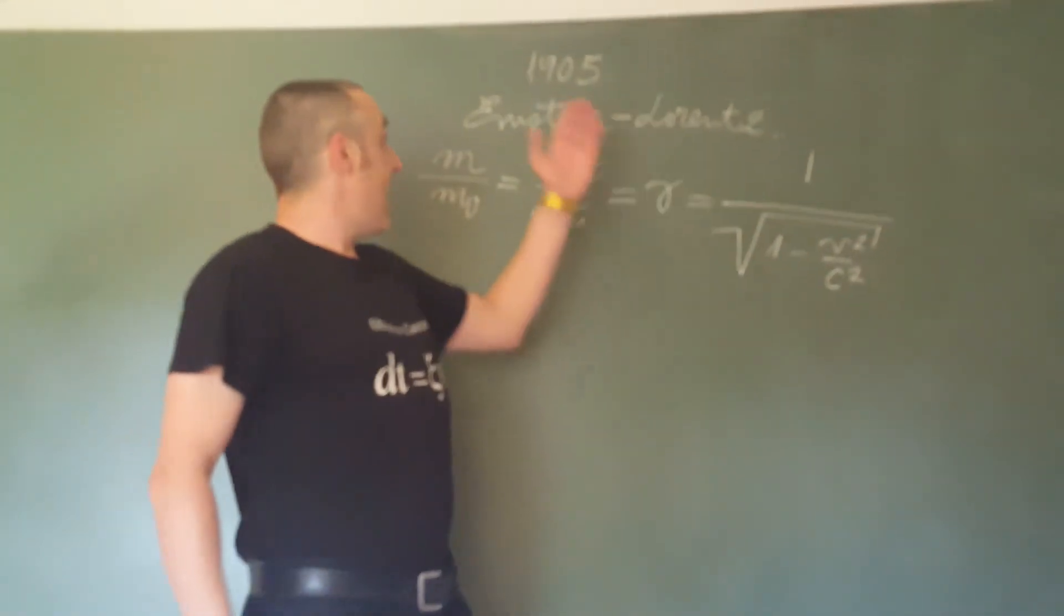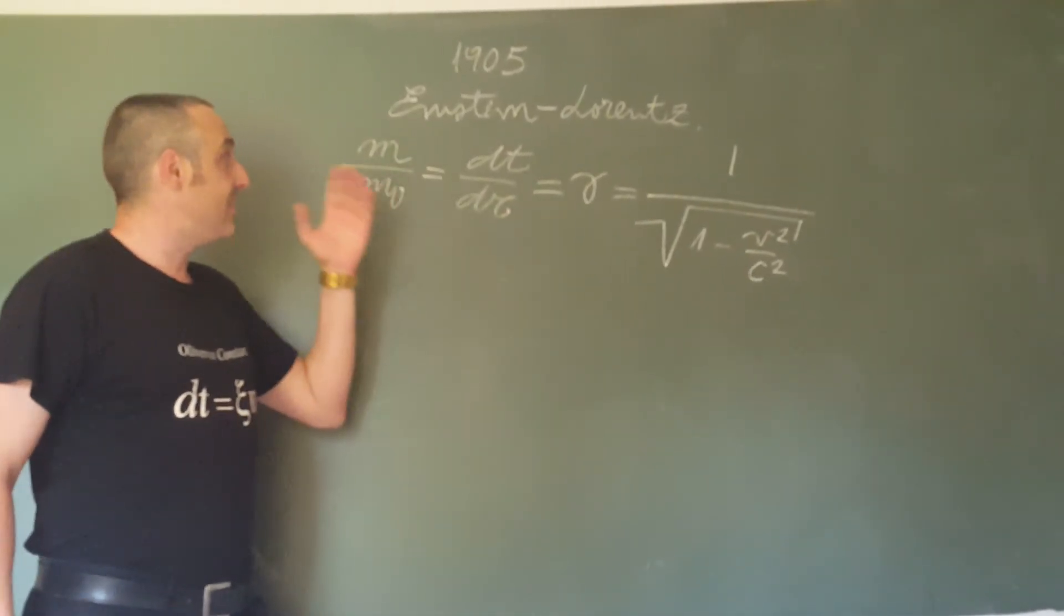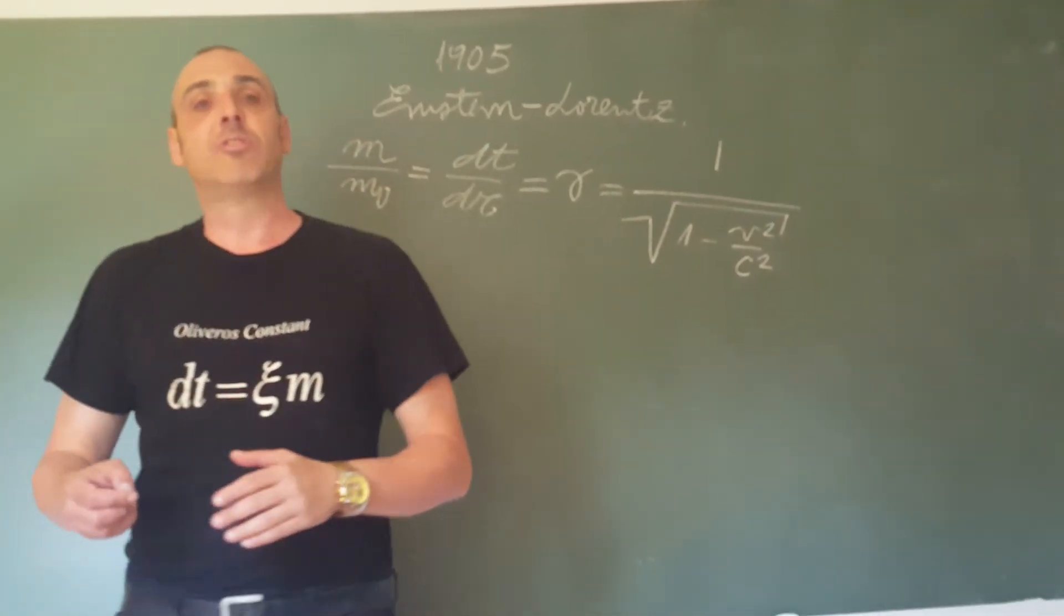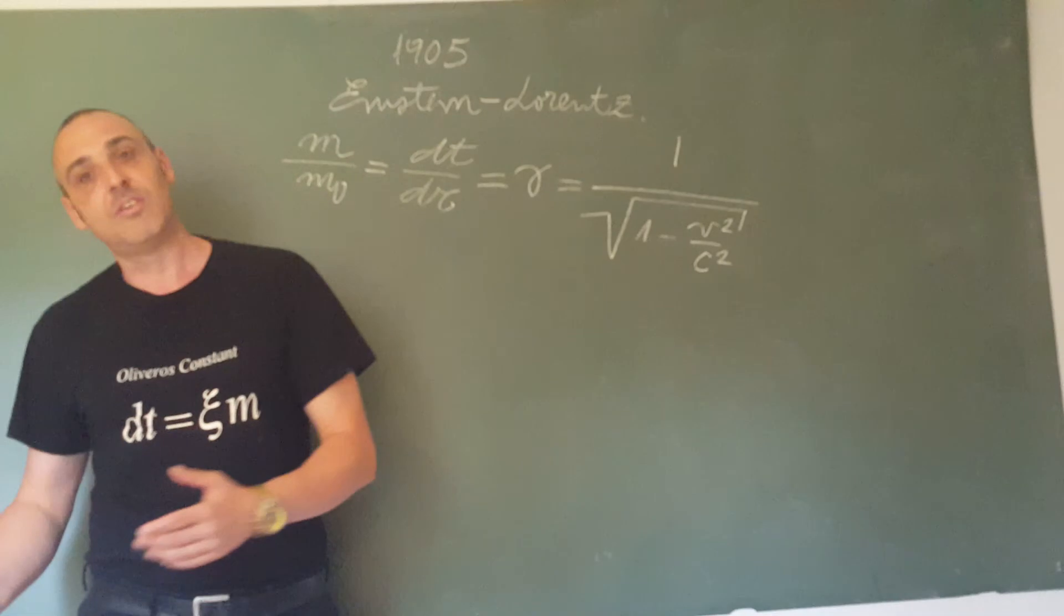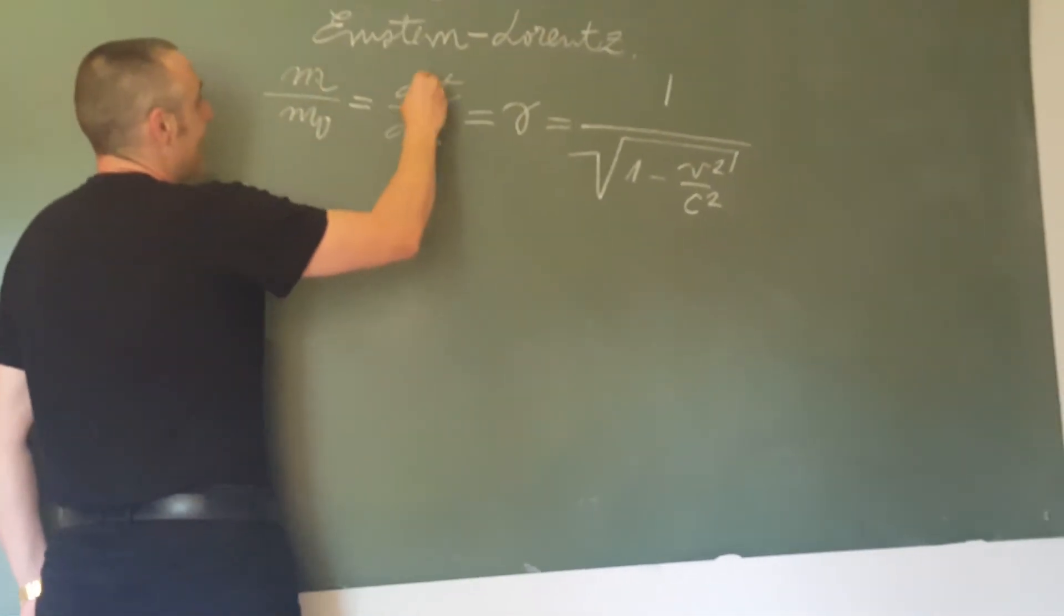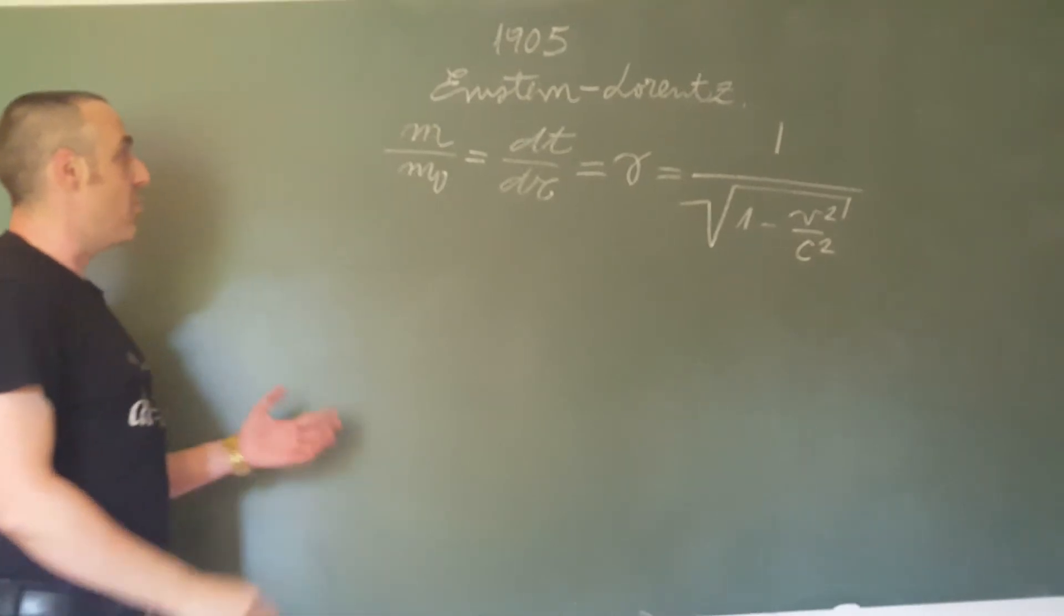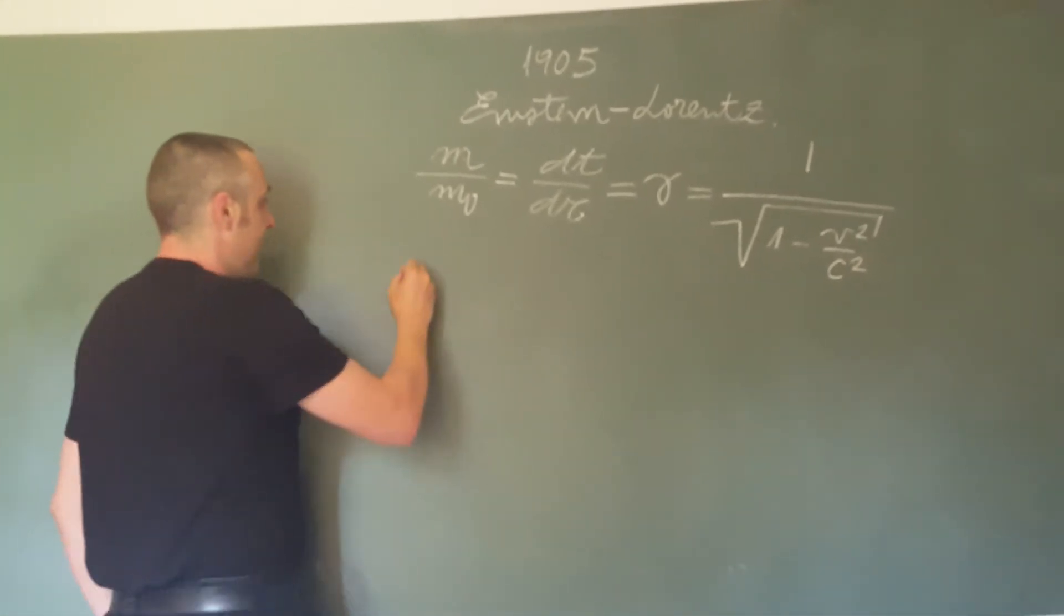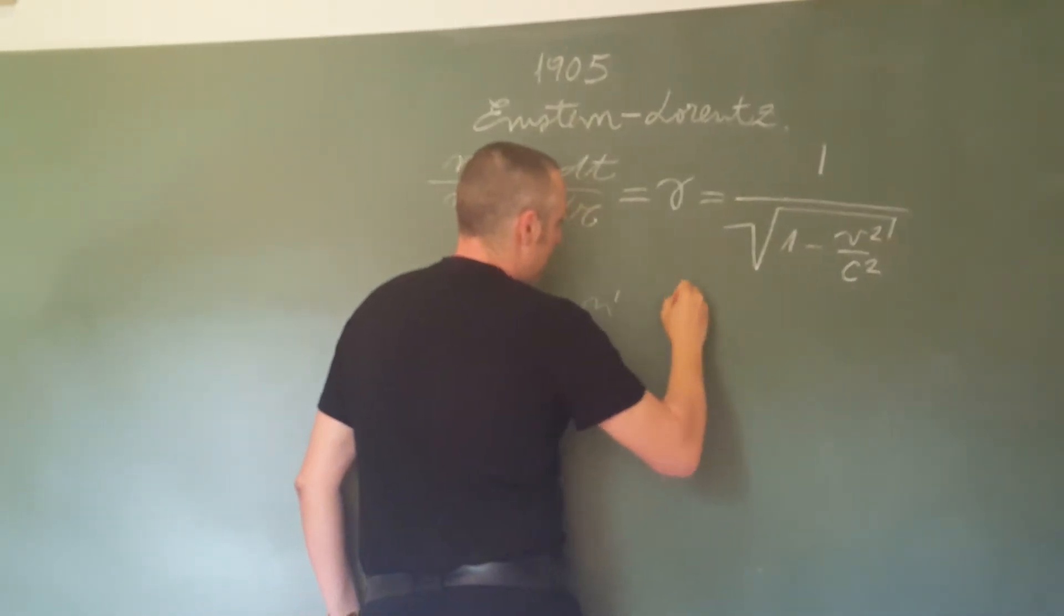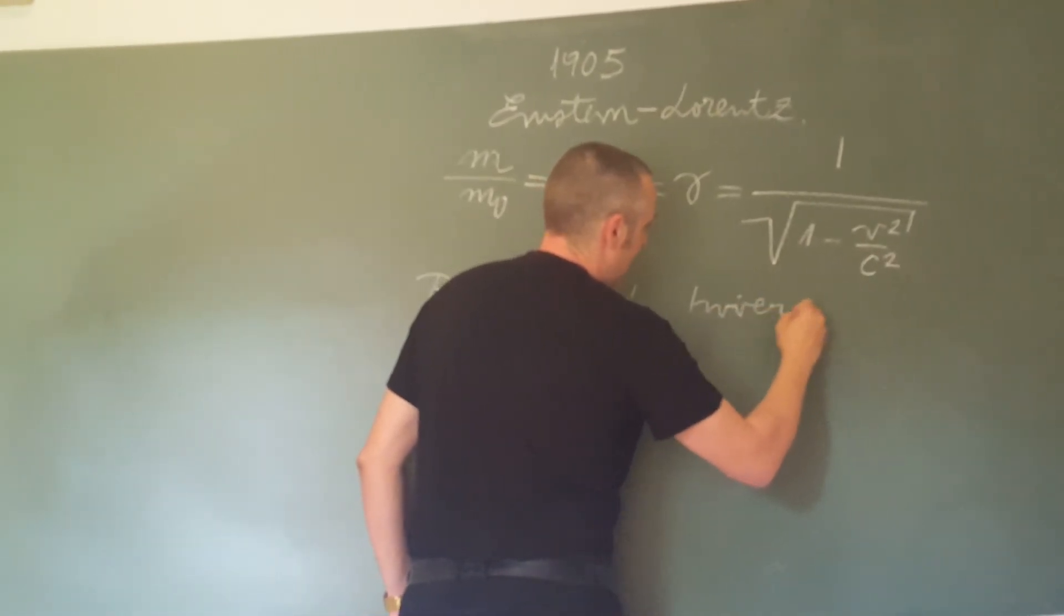This is the Einstein-Lorentz principle, and according to this principle, from this simple equation, I consider two relationships: the direct relationship and the inverse relationship.